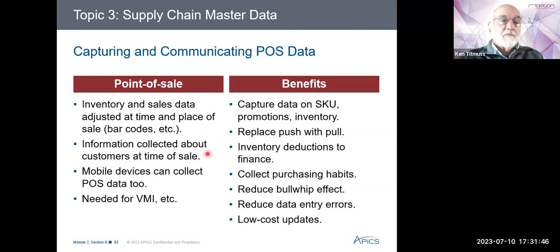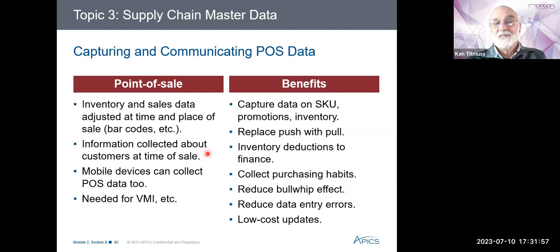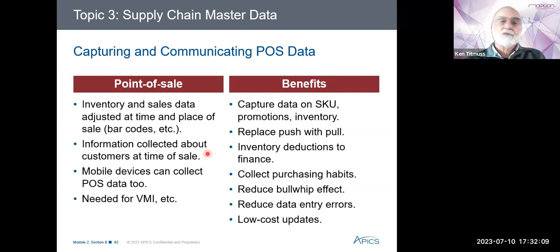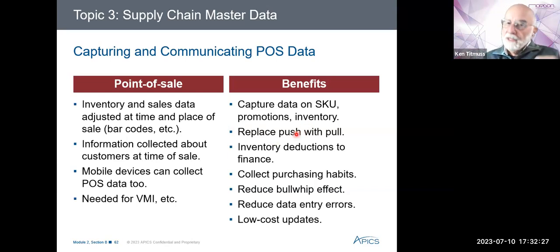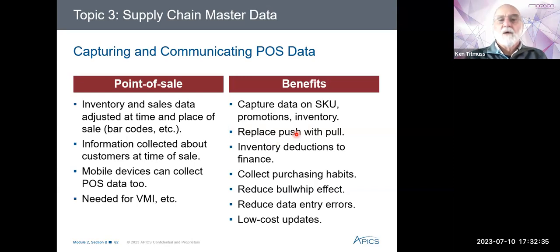Mobile devices can also collect point of sale data. For vendor managed inventory, the supplier or vendor can see what is disappearing out of the inventory and plan to replenish it, maybe even on a daily basis — sold 10 today, so send another 10 to replenish. Some of the benefits: we can capture data on SKUs, promotions, and inventory. We're tending now to replace push replenishment with pull — instead of pushing things down to the supermarket, we're actually pulling out of the supermarket and replenishing what has been pulled from that stock.